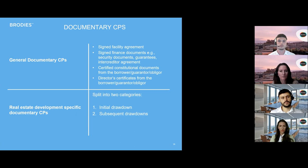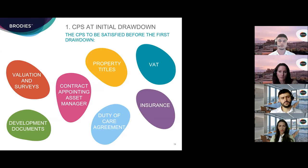CPs are deal-specific and vary depending on the type of loan transaction and the purpose of the loan. Standard documentary CPs you would expect to see include the facility agreement itself, the finance documents such as security docs, guarantees, and intercreditor agreements, and — where the borrower, guarantor, or obliger is a company — director certificates from each company containing certified constitutional documents, board minutes, and shareholder resolutions approving the terms of the transaction and the entry into the loan and security documents.